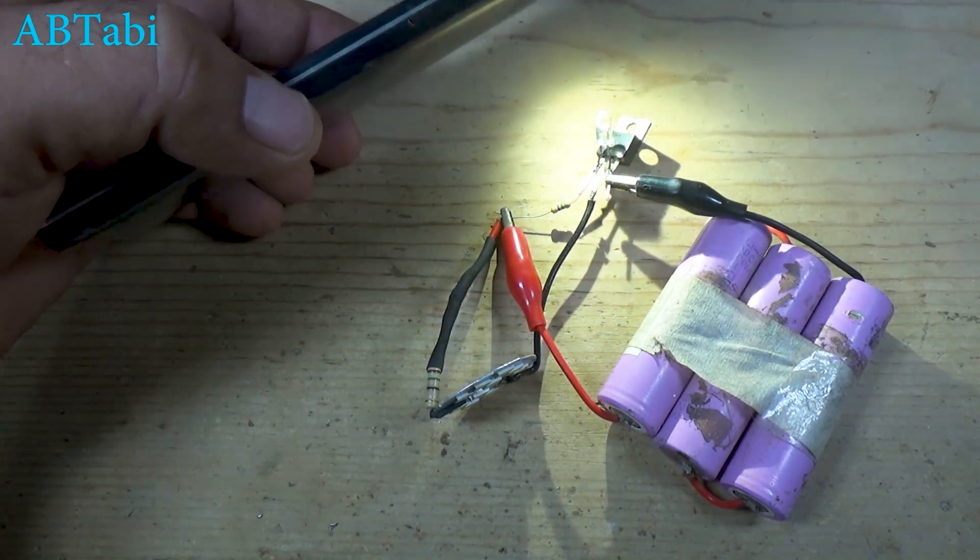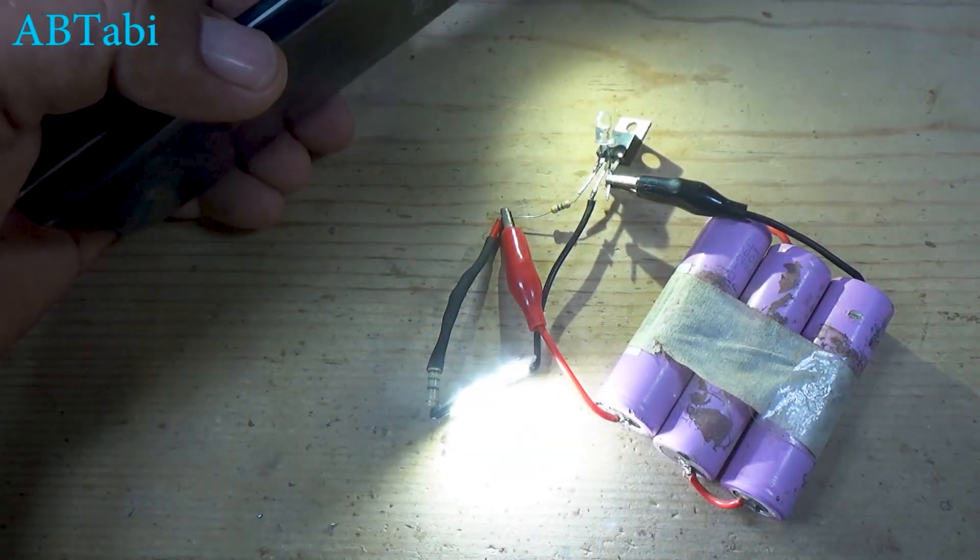As you can see, when I bring a light source close to the optical sensor, the LED light automatically turns off.